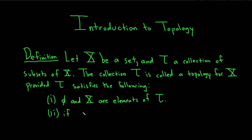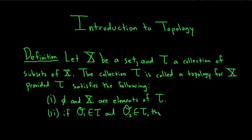So if O sub 1 is in tau and O sub 2 is in tau, then O sub 1 intersected with O sub 2 is also an element of tau.